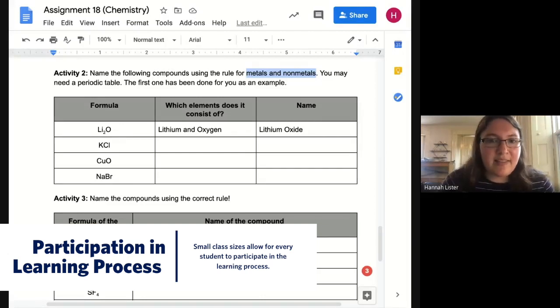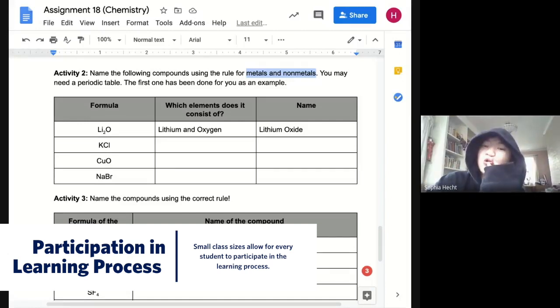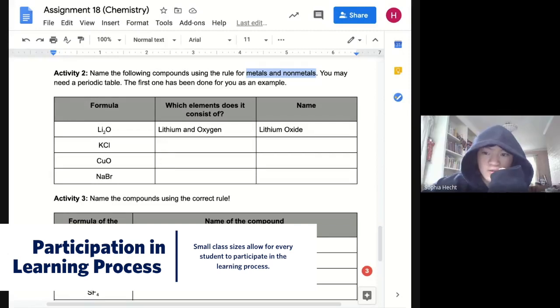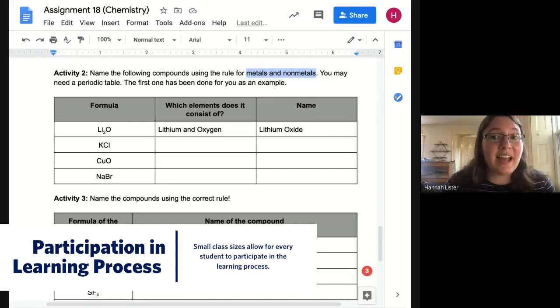All right. Sophia, CuO. What'd you get? Copper and oxygen. Great. So what's the name? Copper oxide. Oxide. Yeah, great.